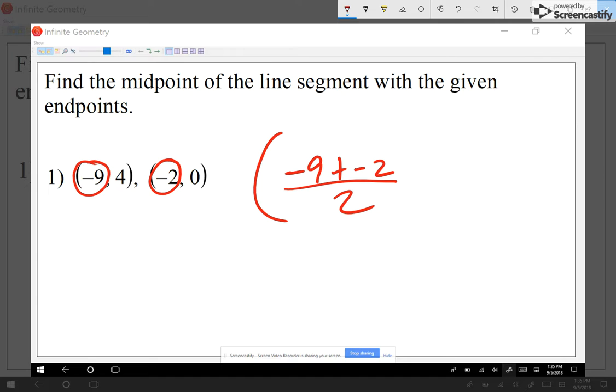Negative 9 plus negative 2 is negative 11, and negative 11 divided by 2 gives me negative 5.5. That's my x value.